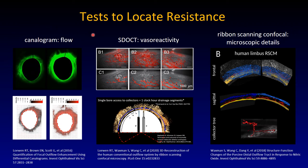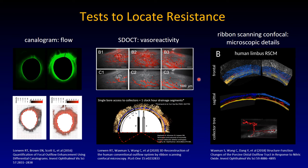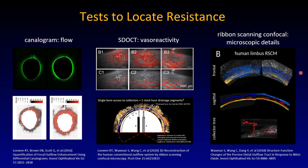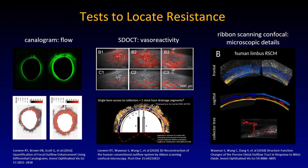There is a problem with all these tests. The canalogram is invasive but is a true functional test that could be done on a patient to test where vessels dilate. The SD-OCT could help diagnose vessel non-reactivity. The ribbon-scanning confocal cannot be done in living eyes — it only works for biopsies in enucleated eyes. We are stuck without a test to reliably locate distal outflow resistance.